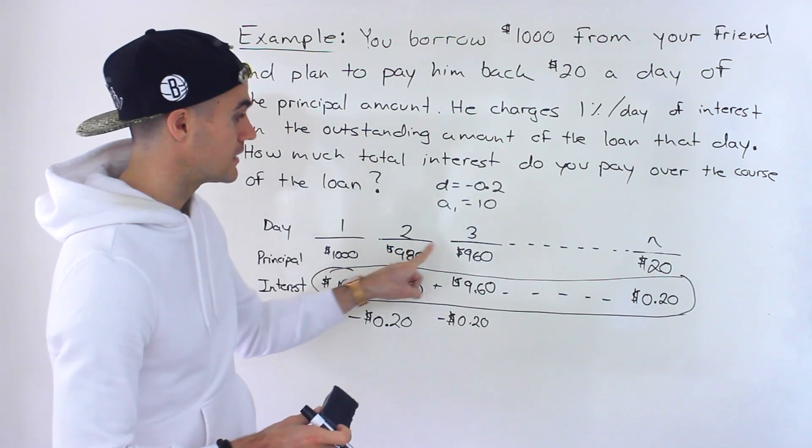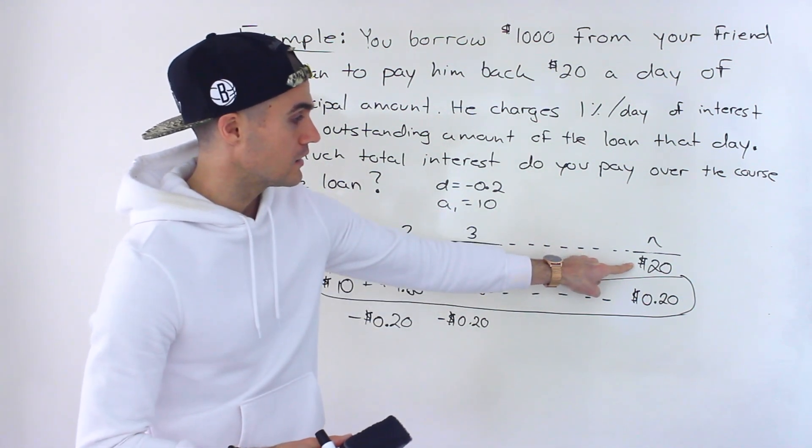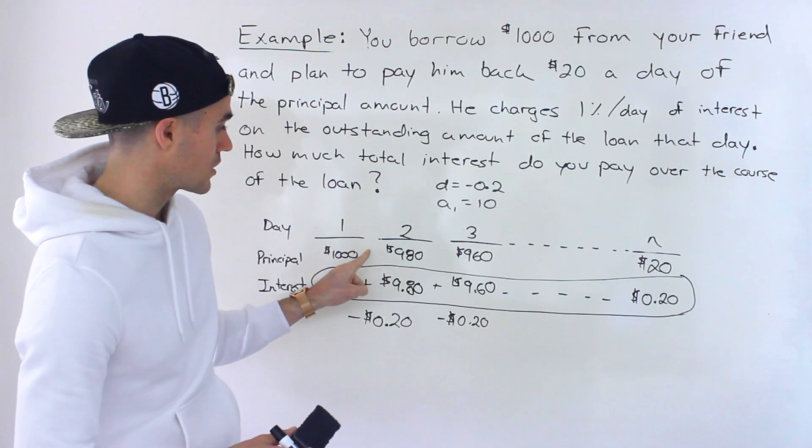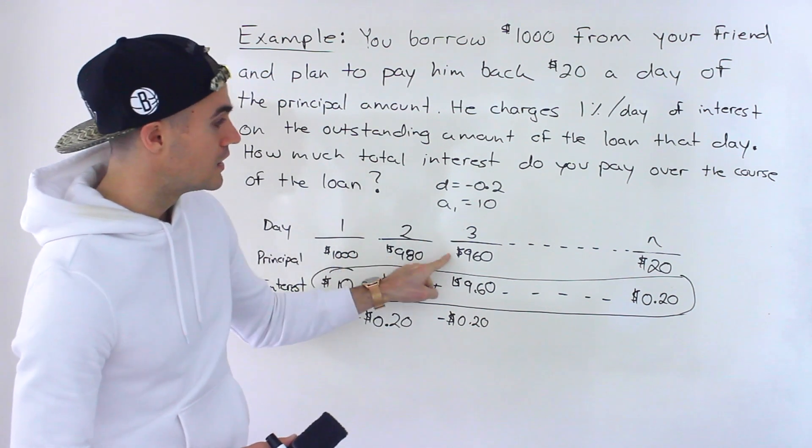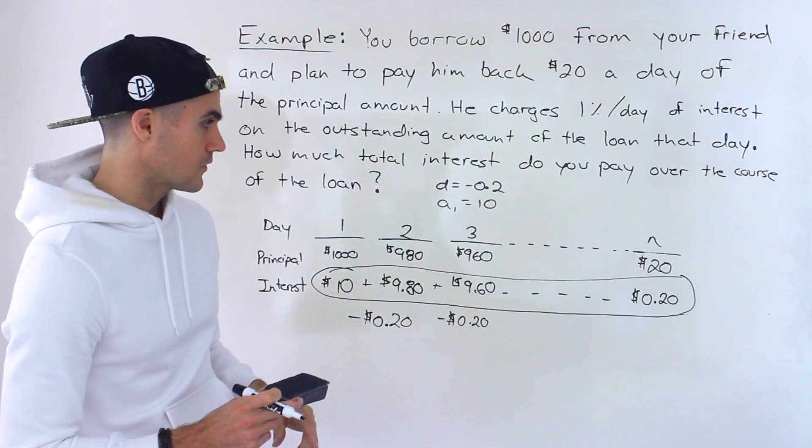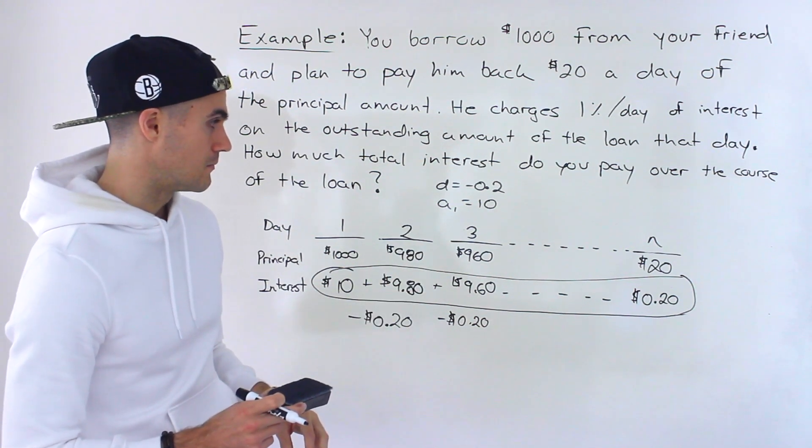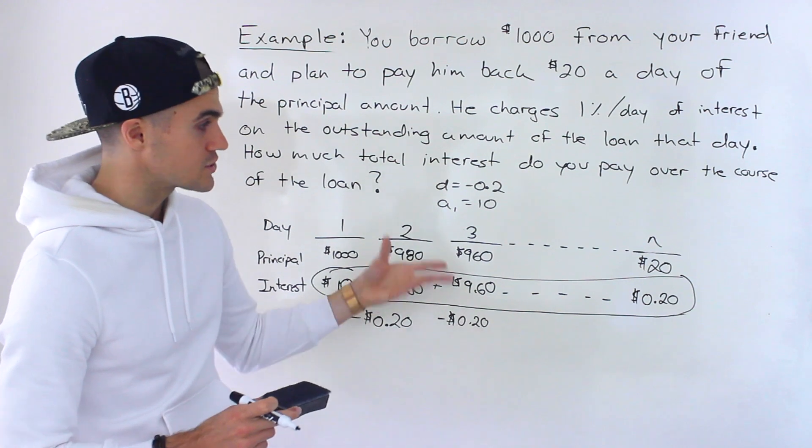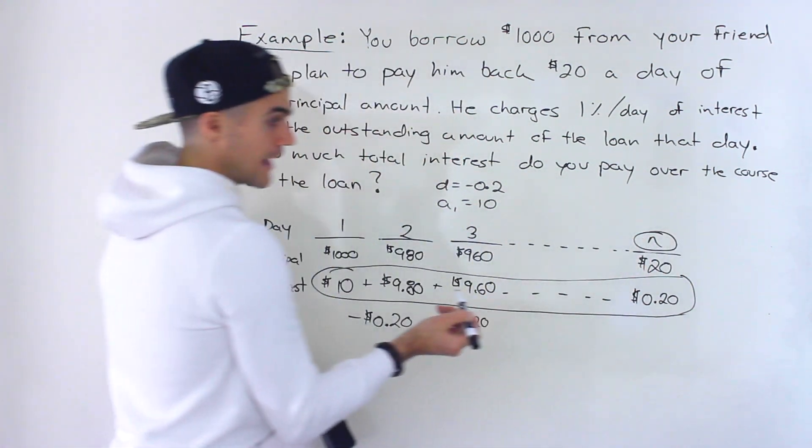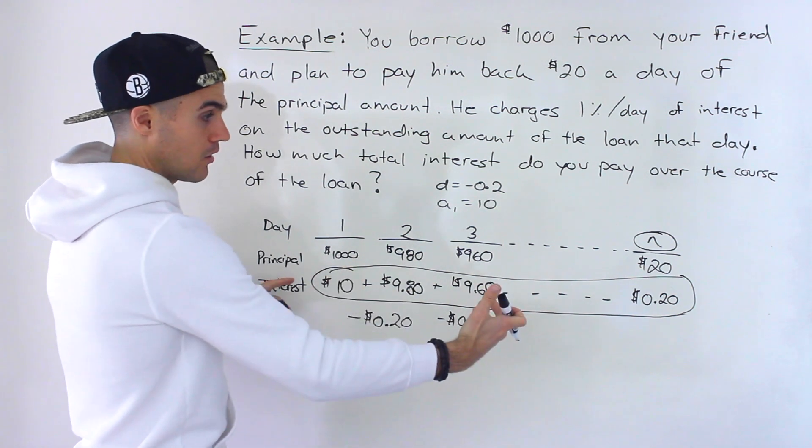You could do 1,000, 980, 960, all the way to 20 because that right there is an arithmetic sequence as well. Notice the common difference for this one would be $20. So whichever way you do it, you're still going to get that same n value. And we need that n value to sum all these up.